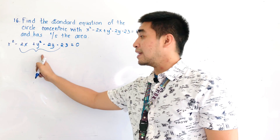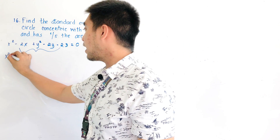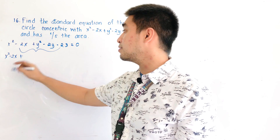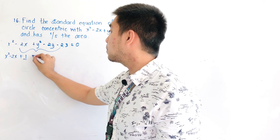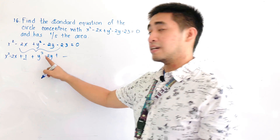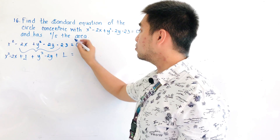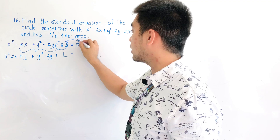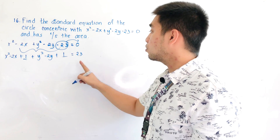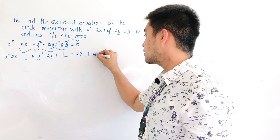In order to find the center, we need to complete the square. We have x squared minus 2x plus — negative 2 divided by 2 is negative 1, squared is positive 1 — plus y squared minus 2y plus — negative 2 divided by 2 is negative 1, squared is positive 1 — equals negative 23 transposed to the other side, which becomes positive 23 plus 1 plus 1.